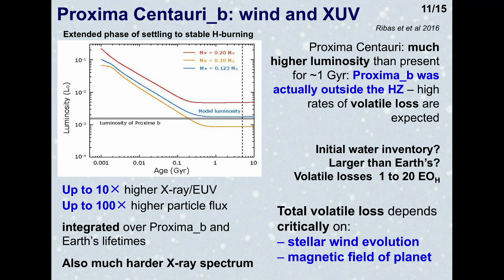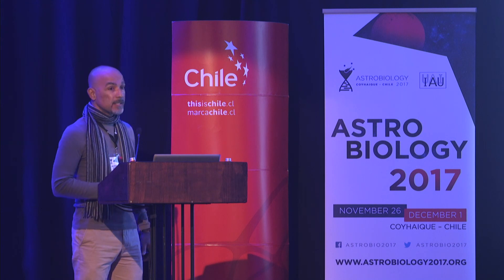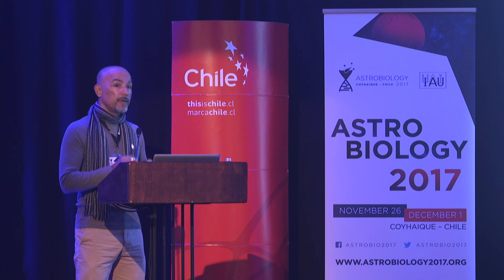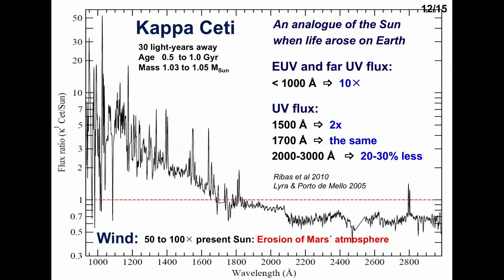Our second case study is κ Ceti, which we encountered when considering the timeline for solar-type emissions. It is a nearby, well-studied star considered to be an almost perfect analog of the Sun when life was arising on Earth, and when Venus and Mars were losing their surface water. It is a young star of around 700 million years of age, slightly more massive than the Sun. In the extreme UV and far UV it is up to a few tens of times brighter than the present sun, about twice as bright in the UV, with emissions equalizing around 1700 Angstroms. The stellar wind is up to 100 times that of the present sun.